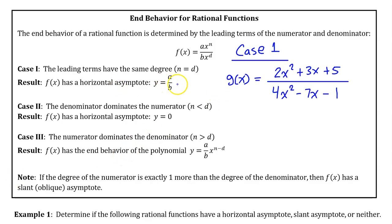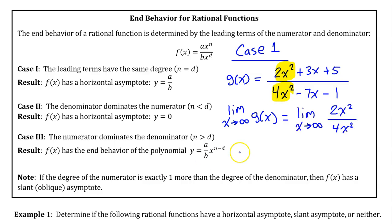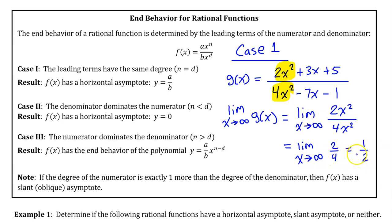To understand why Case 1 makes sense, consider rational function g. The right end behavior is the limit as x approaches infinity of g, but as x approaches infinity, only the highest degree terms will matter. So the right end behavior is the limit as x approaches infinity of 2x squared over 4x squared. The x squared terms cancel, leaving the limit of 2 over 4, which equals 1/2. The limit of a constant is just that constant, so as x approaches infinity, g approaches 1/2. This is the horizontal asymptote described in Case 1.